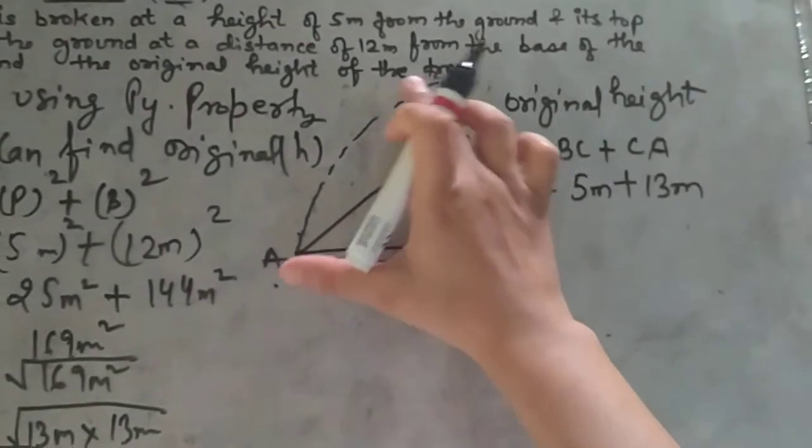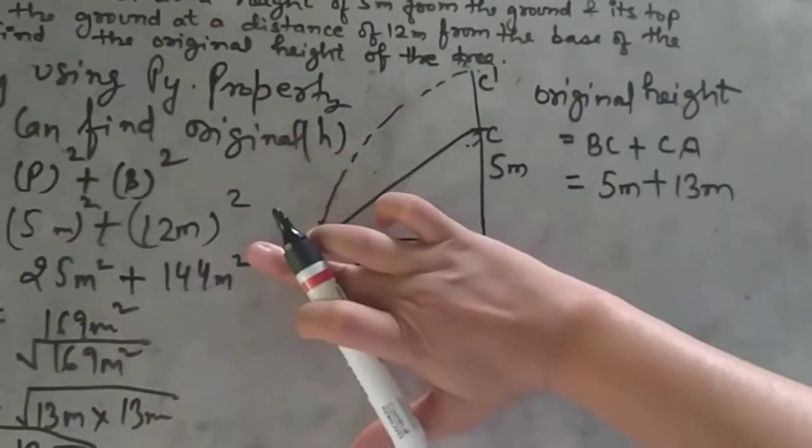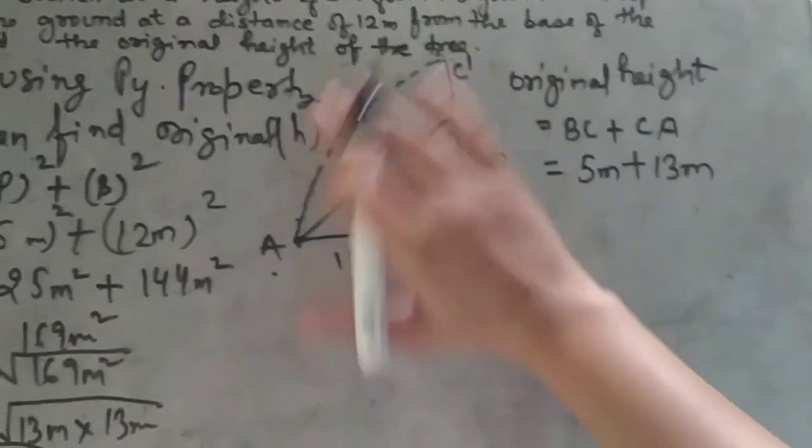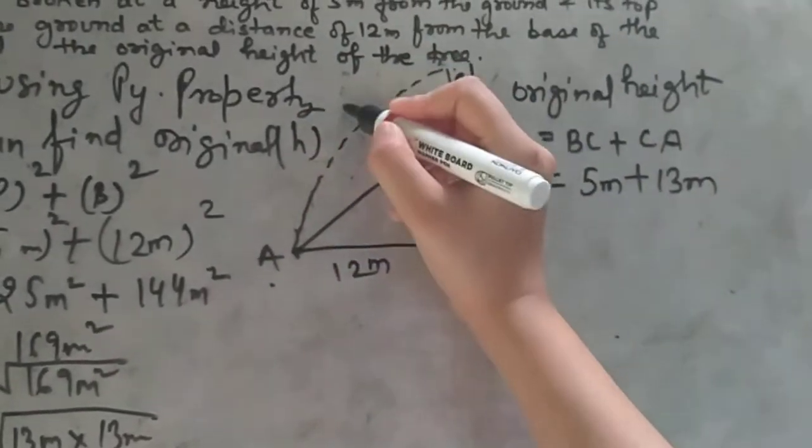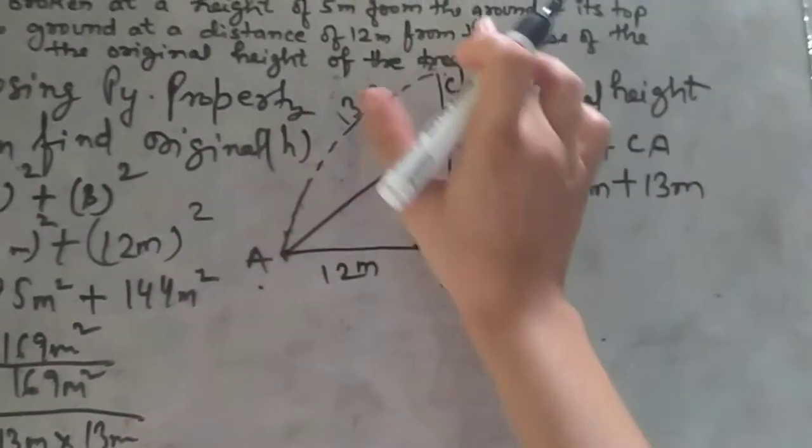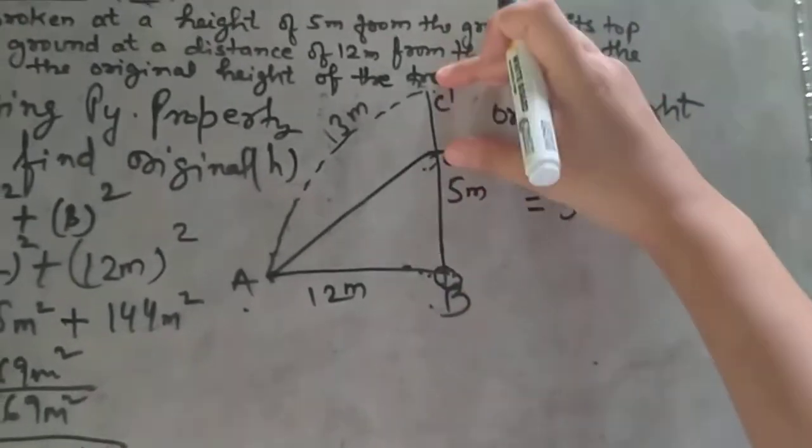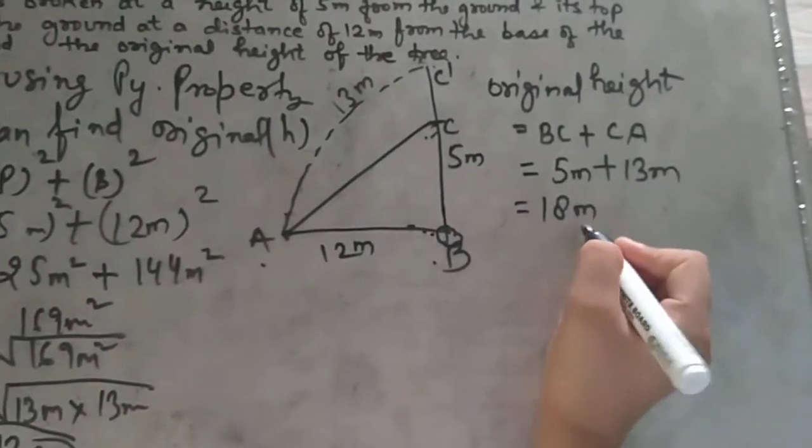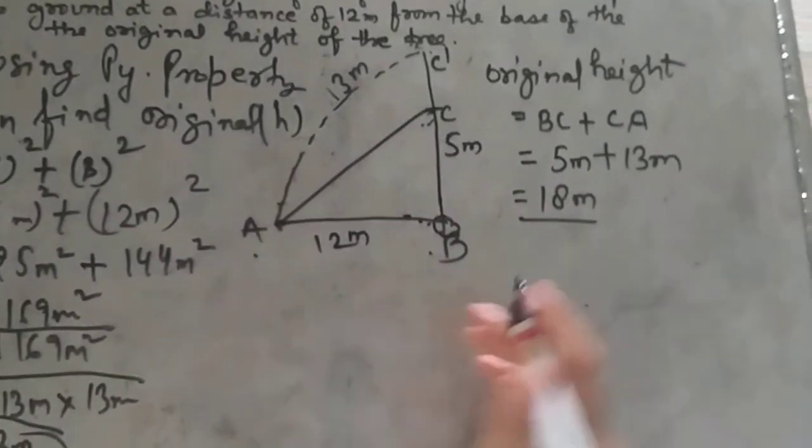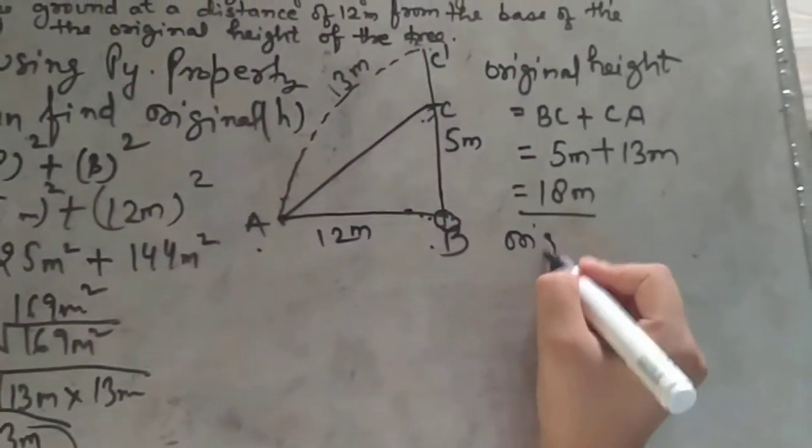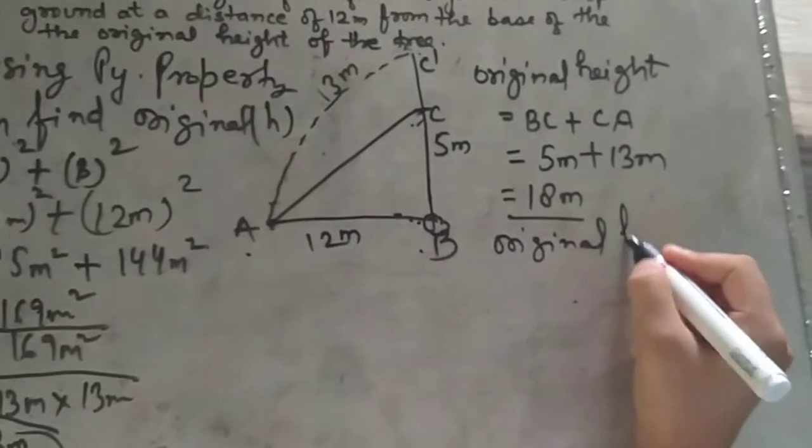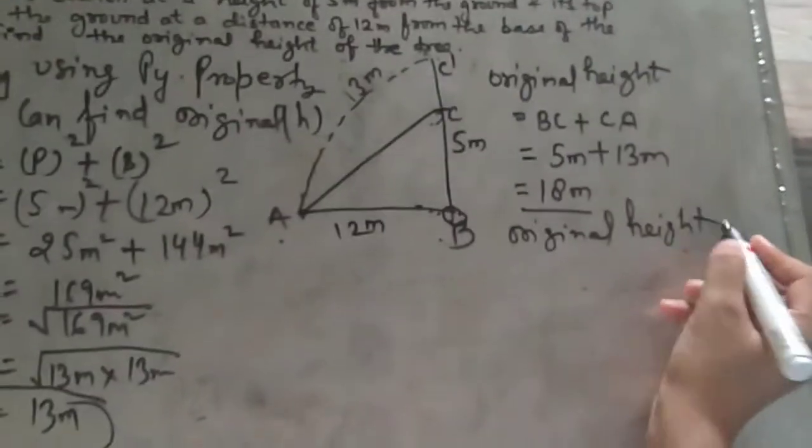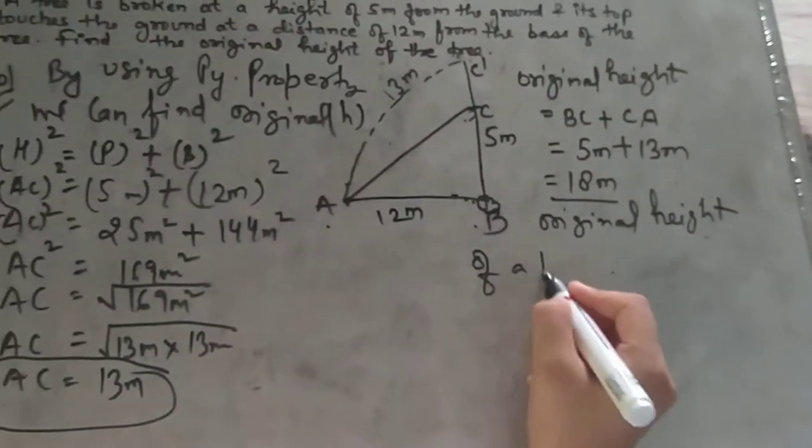This part went down. When standing upright, it is 13 meters. So when it is standing upright, this is 5 meters, plus 13 meters equals 18 meters. So this is your original height of the tree.